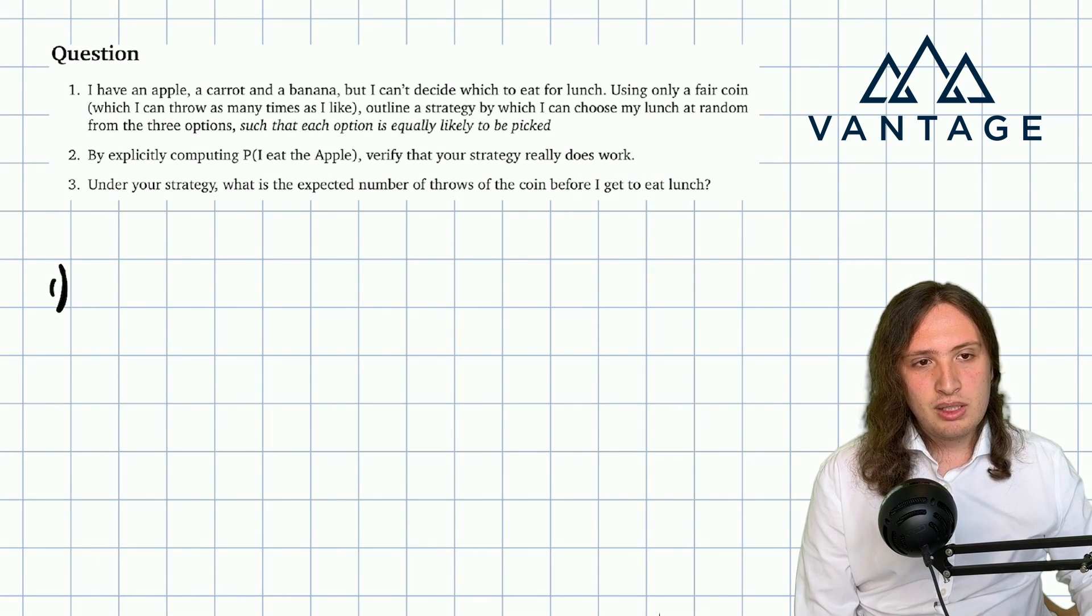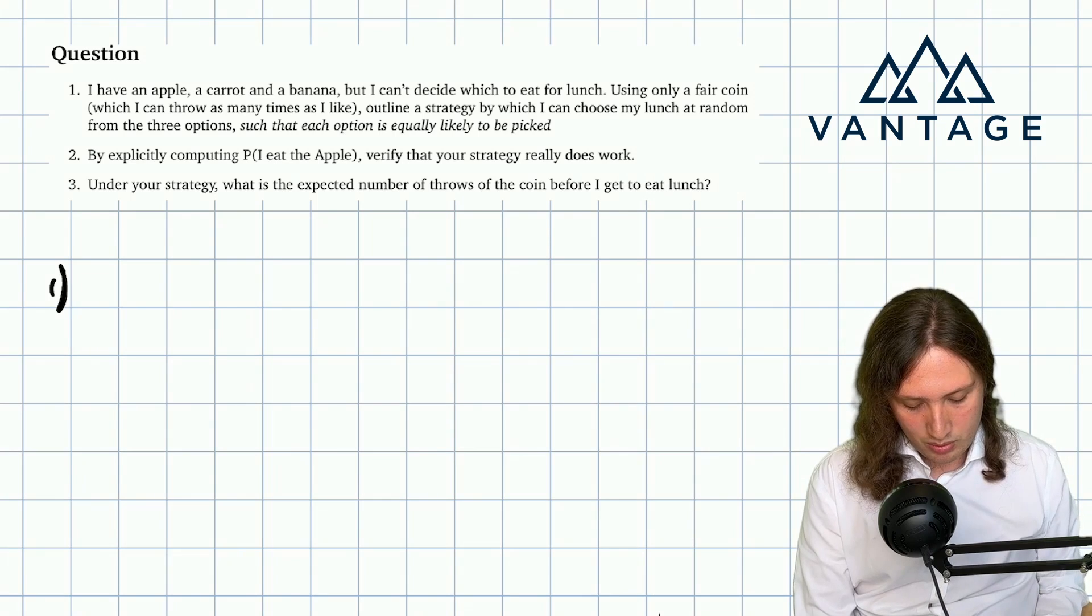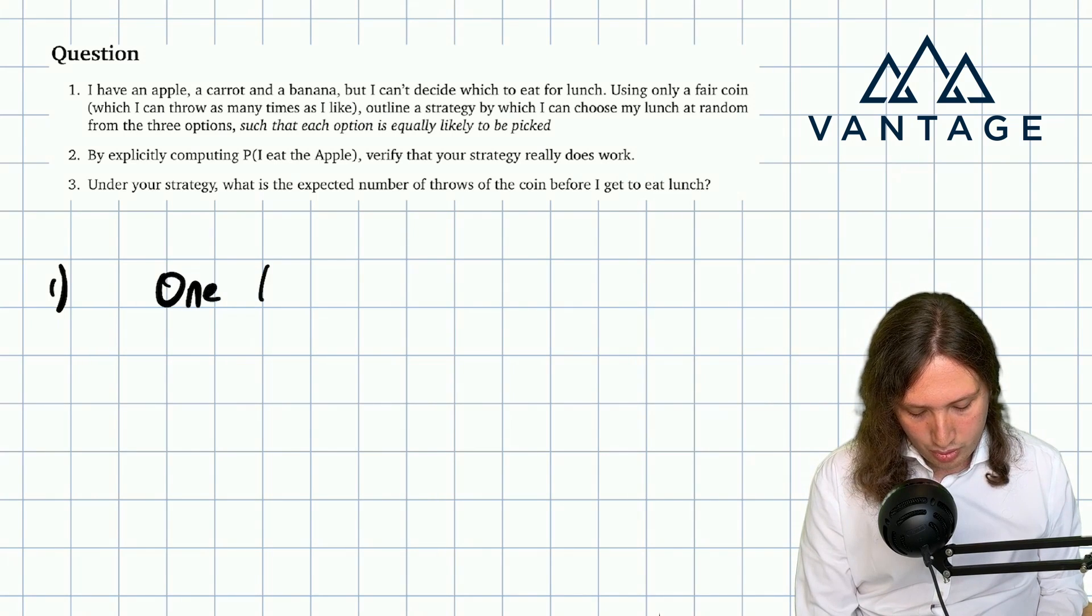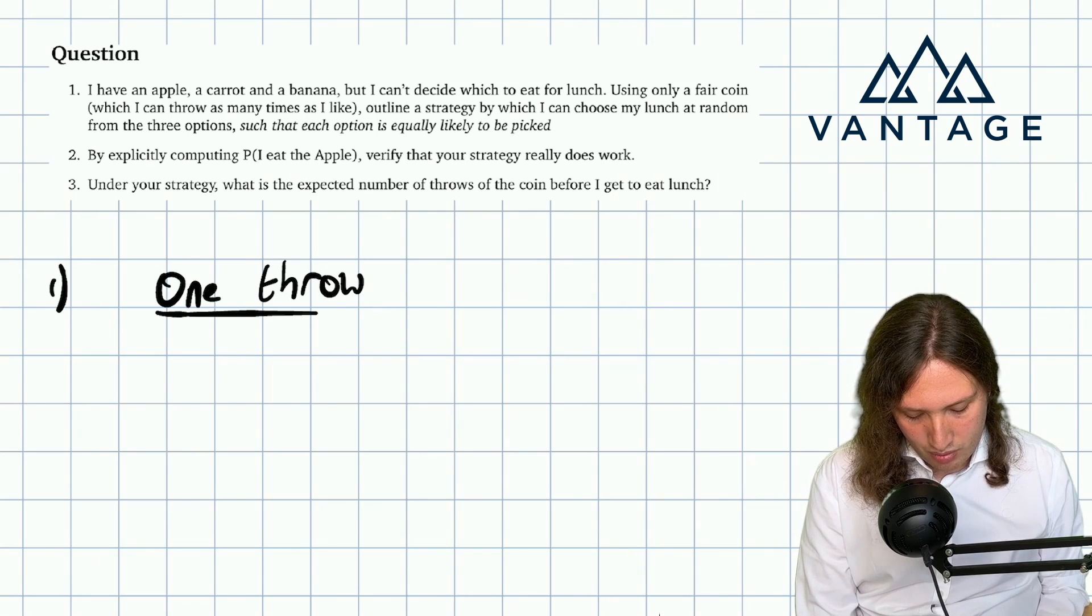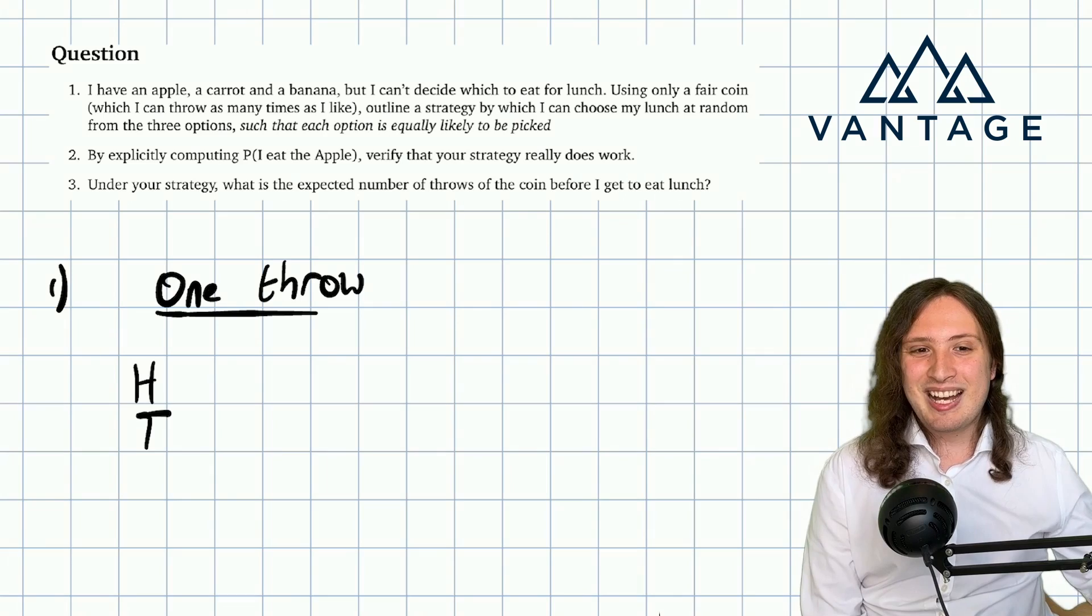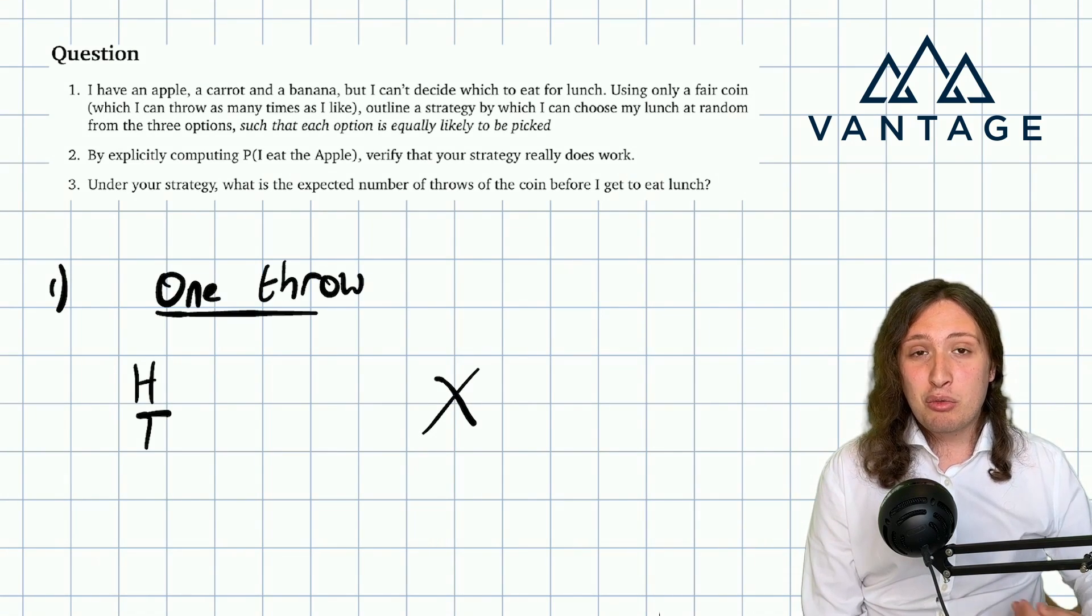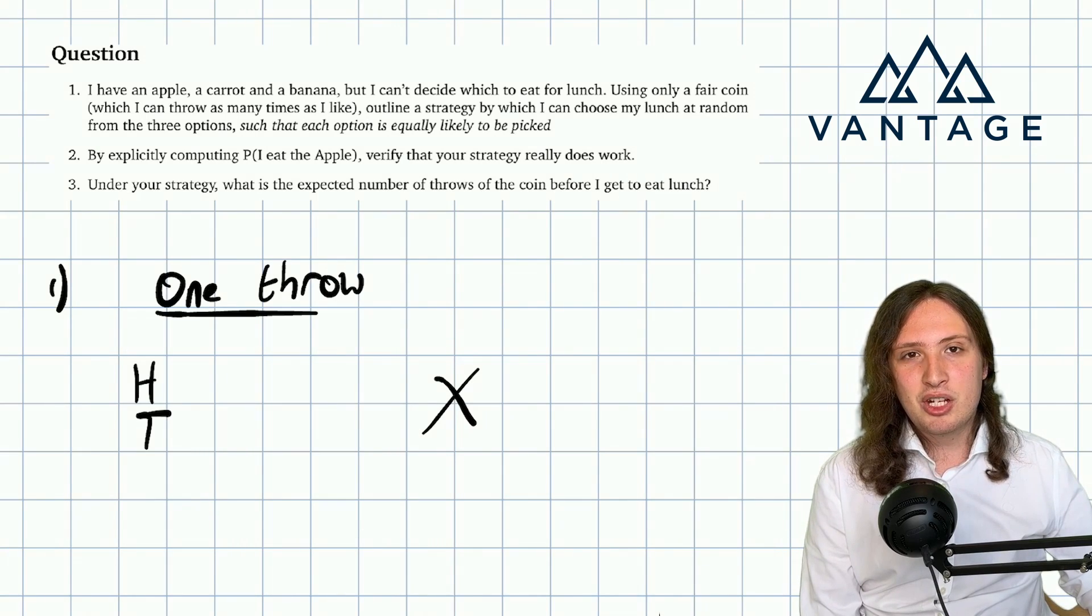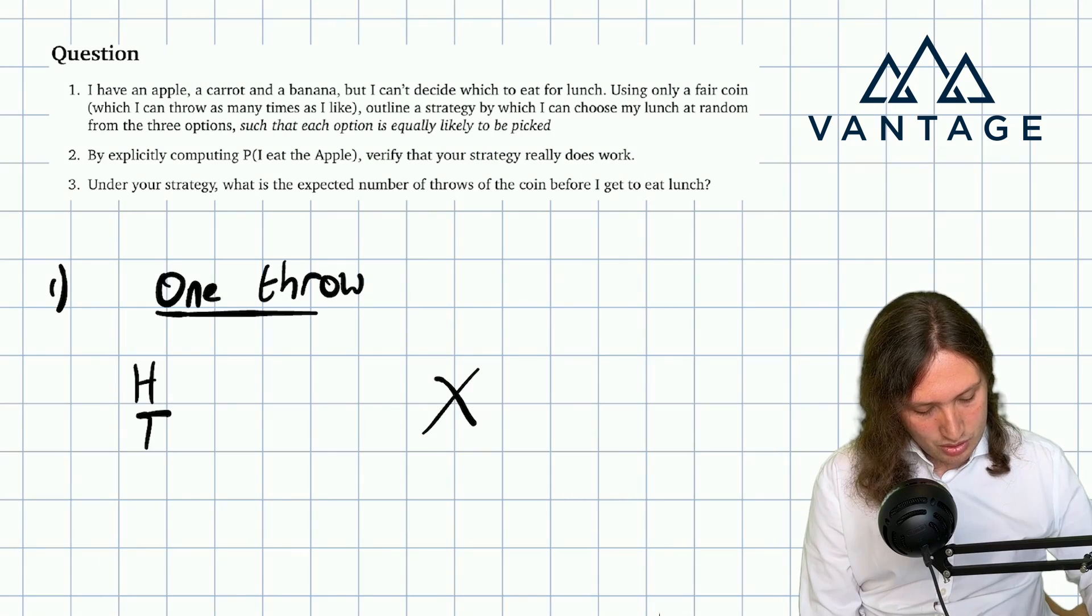First of all, I guess we should try to keep things as simple as possible. So could I do it with only one throw? They say we can throw as many times as we like. Well, if I throw once, I've got two outcomes, head and tail. Clearly that cannot work. There's no way we can achieve this with one throw because there are three lunches that are all supposed to have a chance, and yet there'd only be two outcomes. So that doesn't do the job.